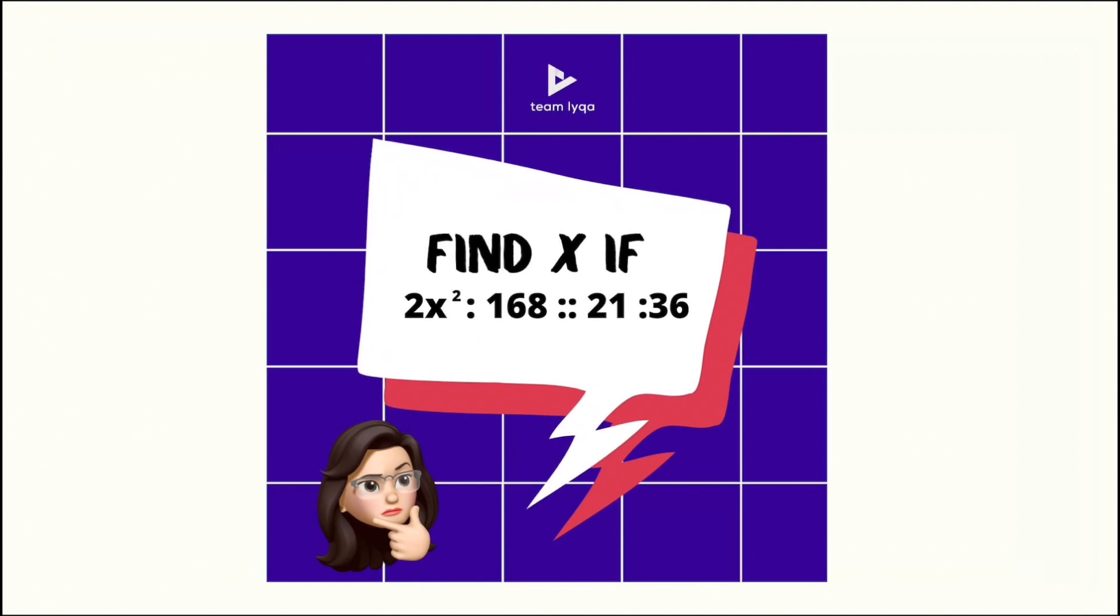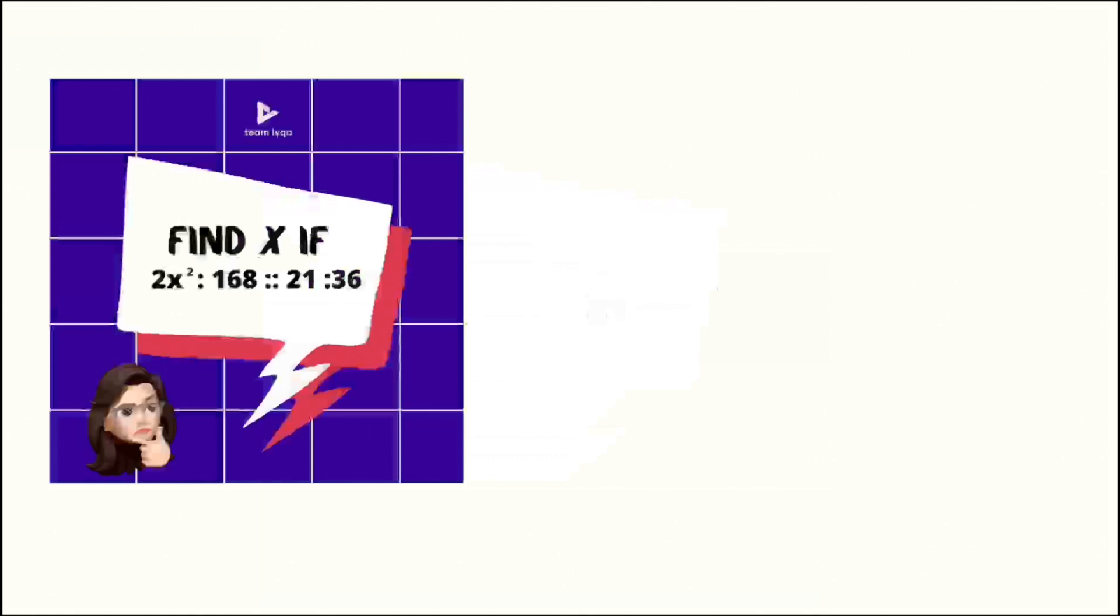Let me explain what the correct answer is right now. This is our question: find x if 2x squared is to 168 as 21 is to 36. I'll rewrite it here on the side so we can start solving it.